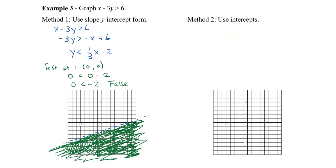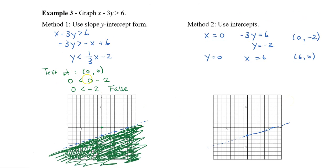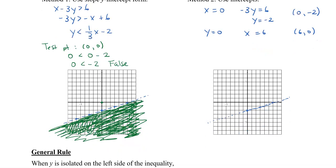Method 2 uses intercepts. When x is 0, we get negative 3y equals 6, so y equals negative 2 — giving the point (0, -2). When y is 0, x equals 6 — giving the point (6, 0). Plotting these two points and connecting them gives the same line. Make sure to use a ruler for accuracy. Then do the same test point check as before, and shade the bottom part.